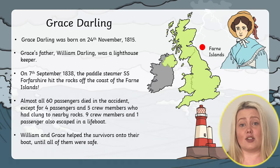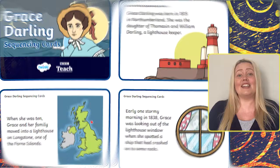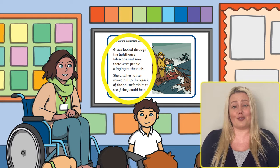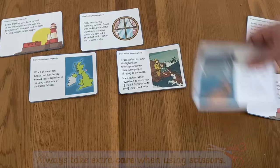Here at Twinkl, our Grace Darling sequencing cards give children a clear step-by-step story of Grace Darling's life. Start by reading through the story with children. Each card contains text exploring an event from the story and a colourful picture. Then challenge children to cut out the cards and sort them into the correct order. This is great independent work or a group task.